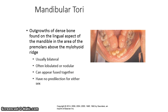Mandibular tori are overgrowths of dense bone found on the lingual aspect of the mandible in the area of the premolars above the mylohyoid line or ridge. They are usually bilateral, and therefore are plural — tori rather than torus — but are sometimes unilateral, in which case it would be a torus.